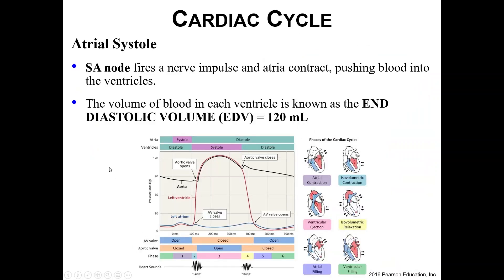Then we move on to atrial systole — contraction. The SA node fires, we spread that nerve impulse, and we do atrial depolarization to get the atria to contract. When the atria contract, any blood left over in the atria gets pushed down into the ventricles, fully filling them. The volume of blood in each ventricle at this point is given a fancy name: end diastolic volume, or EDV. This should be approximately 120 milliliters — write down that number, because it will come up again.